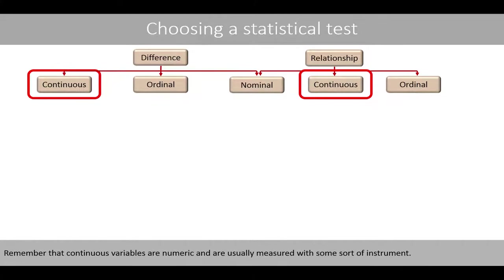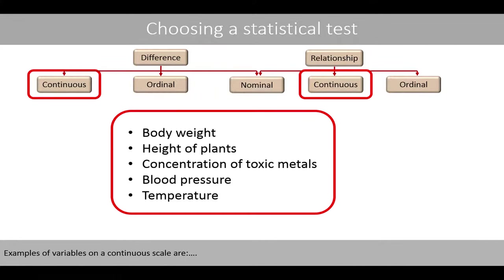Remember that continuous variables are numeric and are usually measured with some sort of instrument. Examples of variables on a continuous scale are body weight, height of plants, concentration of toxic metals, blood pressure, and temperature.